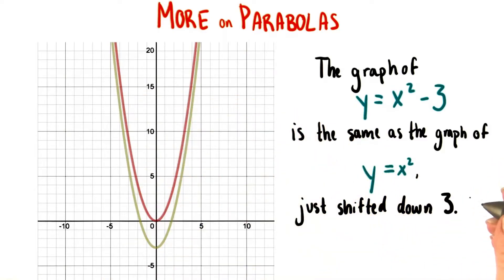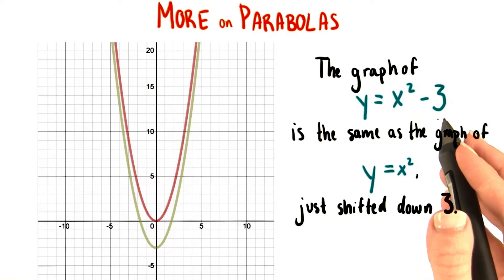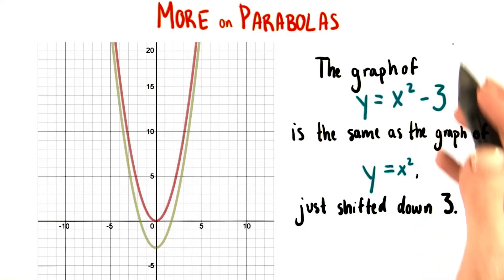This is exactly what we saw earlier when we were dealing with Grant's profit equation and graph. When we changed the constant term on the end, it moved the graph up and down.